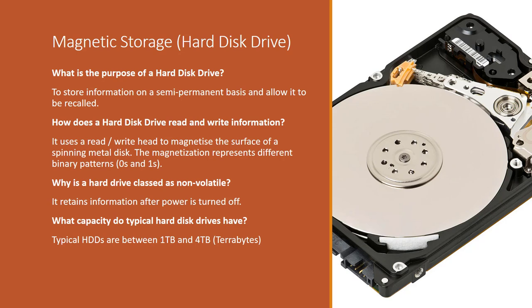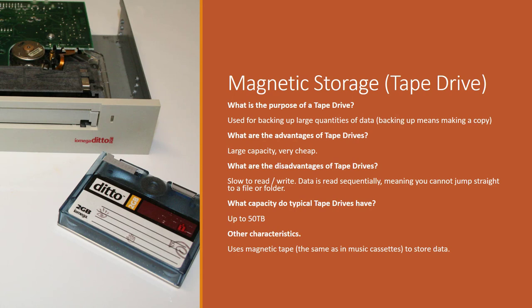To put this in context, 1 terabyte could store approximately 200,000 songs, or 17,000 hours of music. Our next magnetic storage device is the tape drive. These are usually used for backing up large quantities of data. Backing up is the process of making a copy of something, and the tape drive usually makes a copy of an entire computer system in case it has a failure.